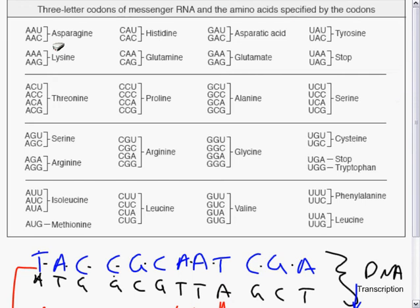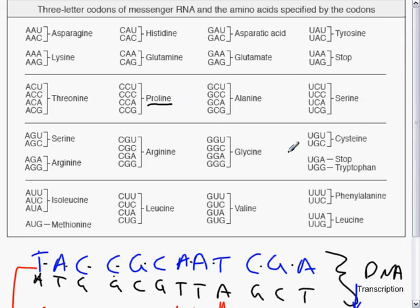The first part is a table of the messenger RNA code and the amino acid associated with it. As we can see, there's some redundancy in the system. Proline, for example, is coded by CCU, CCC, CCA, and CCG. This is expected, as there are 64 different possible codes for 20 amino acids. Some codons are used for other purposes — we have stop codons here, and methionine, although not labeled as a start codon, is actually the start codon, so every protein begins with methionine.